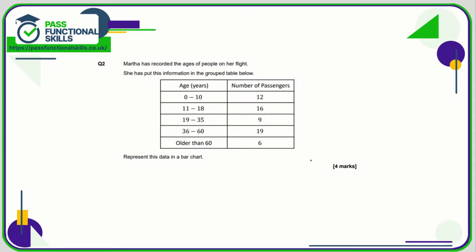Question two: all we need to do is put the information from the table into a bar chart. There will be five bars in total going up to various heights. The key thing with the bars is they are all going to be exactly the same width, and there's going to be a space between them — and the space between all of the bars is going to be equal as well.